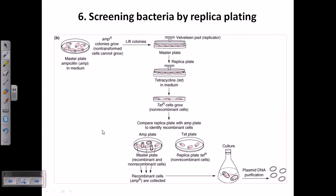The last kind is a screening of bacteria by replica plating. The master plate contains bacteria with the ampicillin resistant gene. When we lift the colony with a velvet pad, the pad gets an imprint of all the bacterial cells. We then take this pad and place it onto a tetracycline-containing medium, which is initially sterile and free of any bacteria.